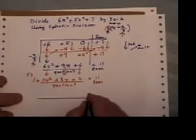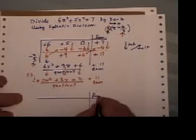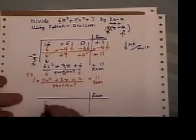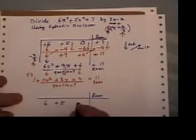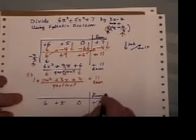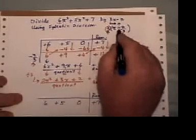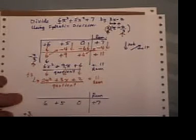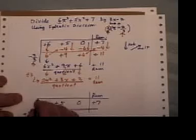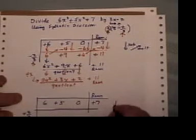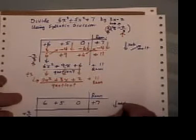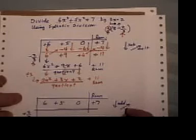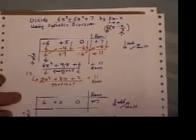Now, as I promised you, I'm going to show you how we would do it if we took the opposite of 2 thirds and made it plus 2 thirds here. Then our pattern is instead of subtracting, we're going to add going downwards, but still multiply going that way.